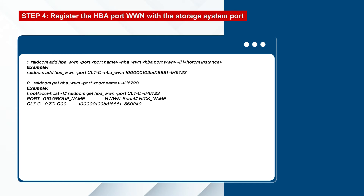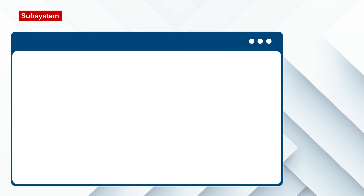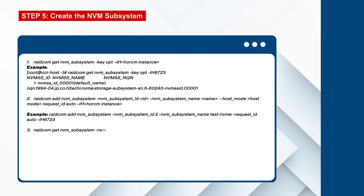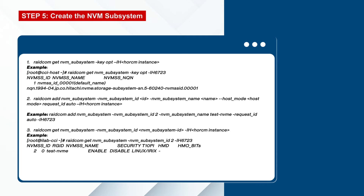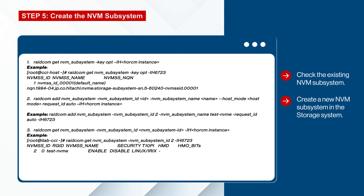The next step is registering the HBA port. We use RAID comp commands to register the HBA port with the associated storage port, then we can verify the details. Now we're ready to create the NVMe subsystem. First we identify the existing NVM subsystems on the storage system, then we create an NVM subsystem with an available ID.